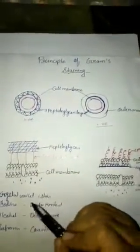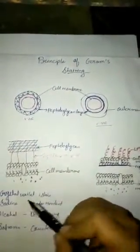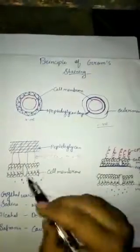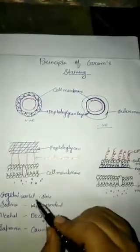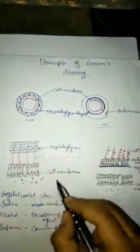This crystal violet and iodine make complex because crystal violet has positive charge and iodine has negative charge, so they form complex easily. This complex is called CVI complex, that is crystal violet and iodine complex.